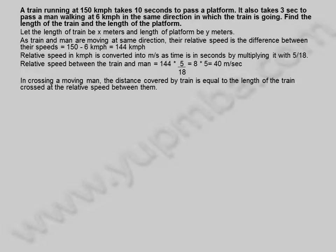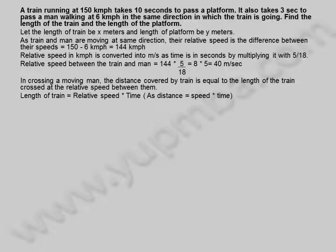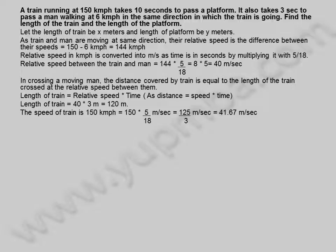In crossing a moving man, the distance covered by the train equals the length of the train, crossed at the relative speed between them. Length of train equals relative speed into time, as distance equals speed into time. Length of train equals 40 into 3 meters, equals 120 meters.